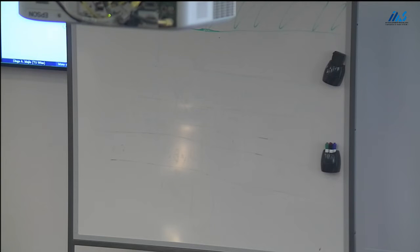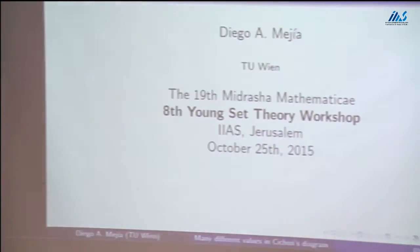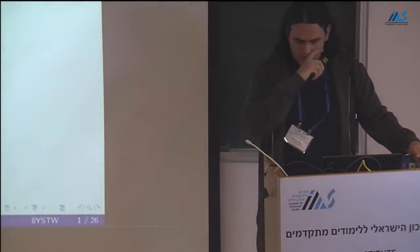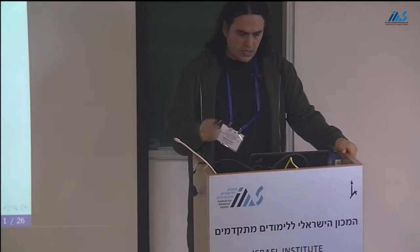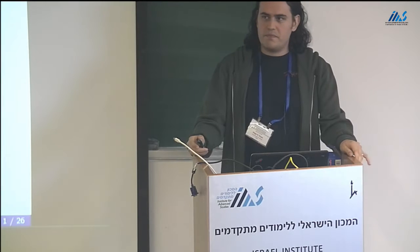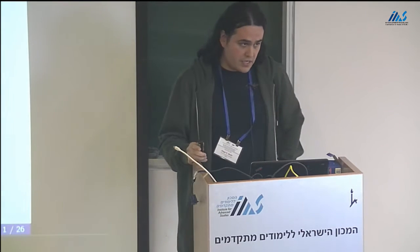In terms of this conference, I'm really honored to be here. Very nervous, too. I'm going to talk about Cichoń's diagram and how to force to get many values in the diagram. I will talk mainly about two methods. Maybe later I will not have much time to do it, but at least I will explain, roughly, what it is.